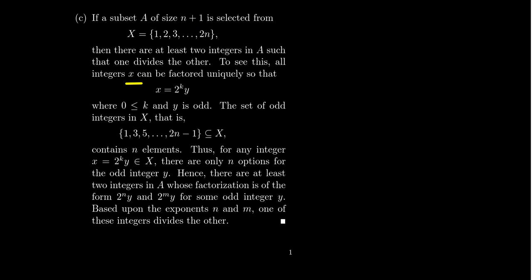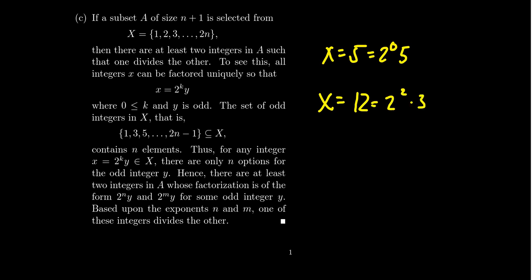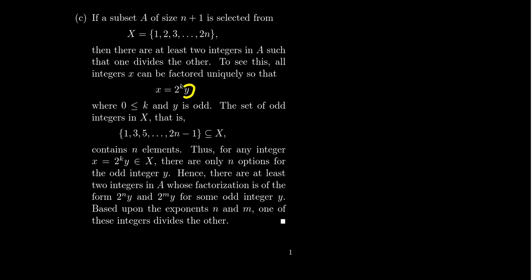All integers can be factored in the following format: you have an integer X, you can take away all the powers of two that divide it, and you're left with some odd integer Y. For example, if X is itself odd, like 5, you get 2 to the 0 times 5. If X equals 12, you factor off all the powers of 2, which is 2 squared, and you're left with 3. Every integer has a unique factorization in this regard — taking away all powers of 2 leaves you with an odd factor Y, which will help us with this pigeonhole situation.